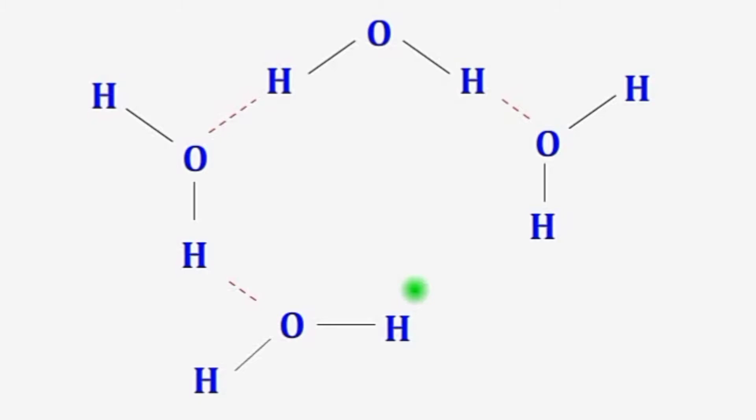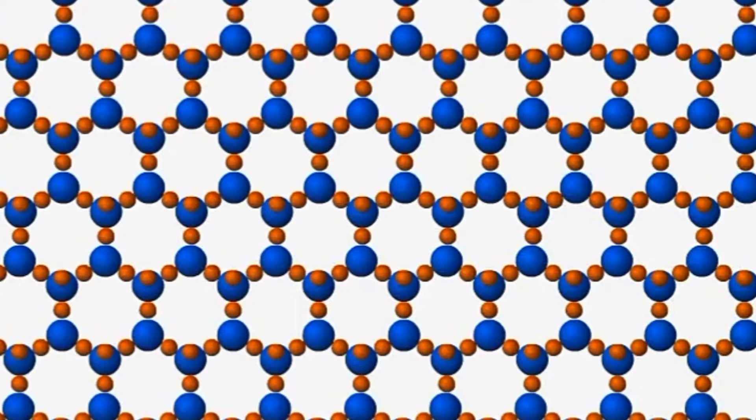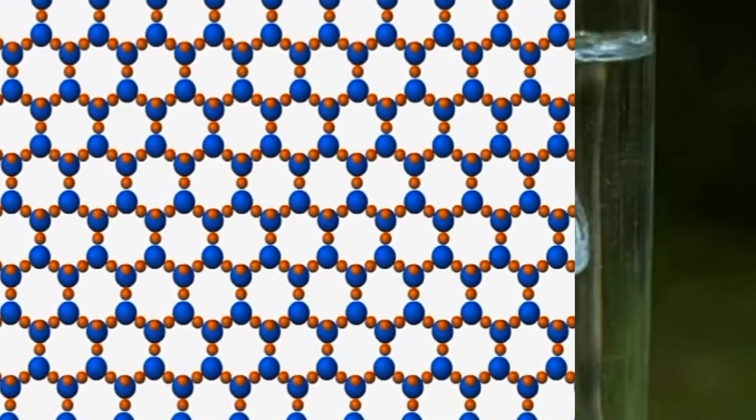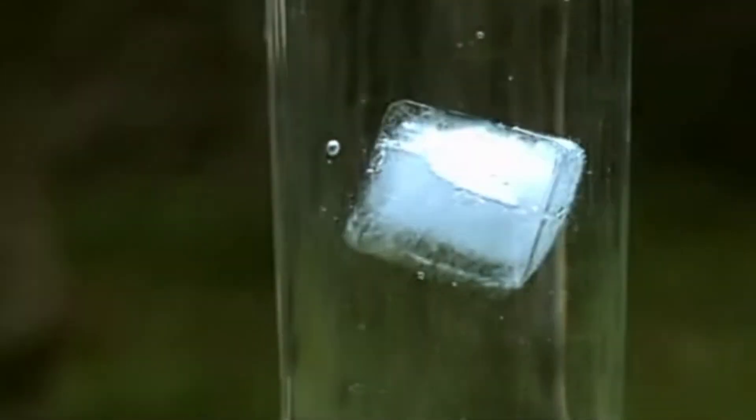The arrangement of water molecules in ice is an open structure, that is honeycomb structure, occupying a large volume. And due to larger volume, ice is less dense than liquid water, hence floats on water.